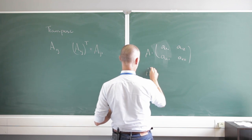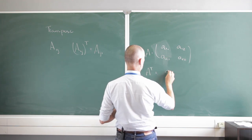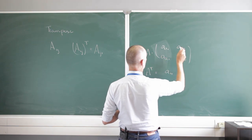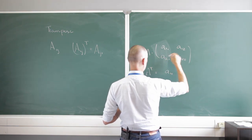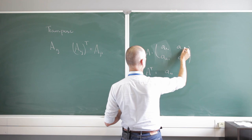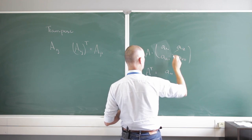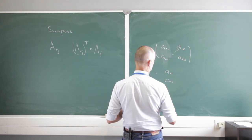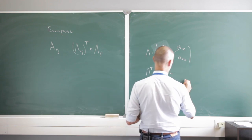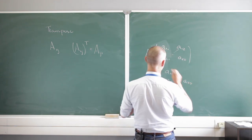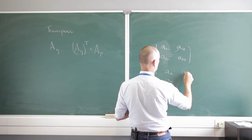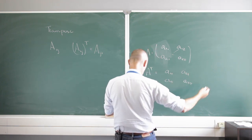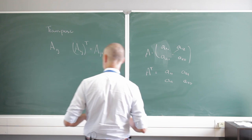A transpose is then: A11 stays where it is, A12 becomes A21 so it moves to that position, A22 stays the same, and A21 goes up to where A12 was. As matrices grow bigger, the same principle applies.